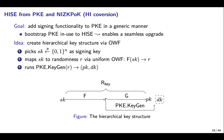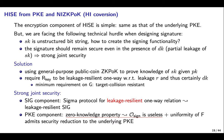Our second generic construction of HISE is from PKE and online ZK-POK. The goal is to add signing functionality to PKE in a generic manner, so we can bootstrap PKE in use to HISE seamlessly. The idea is to create a hierarchical key structure by a one-way function. We first pick a random bit string as a signing key, then map it to a random seed R via a uniform one-way function. Finally, runs PKE's key generation algorithm with random seed R to generate a public key and a decryption key.